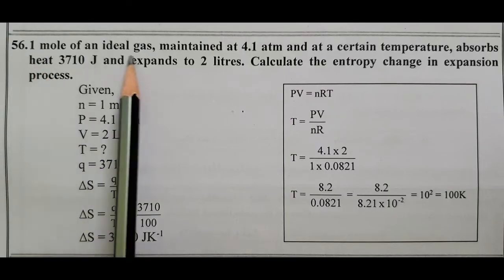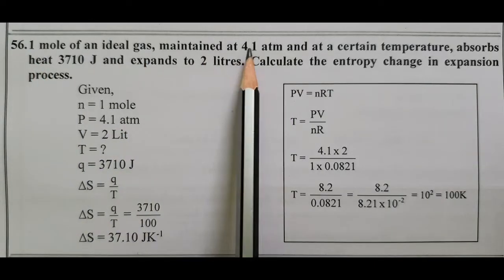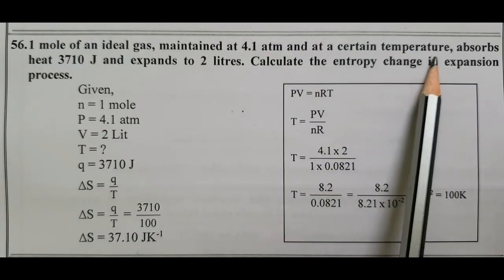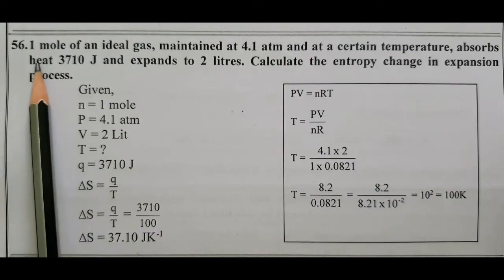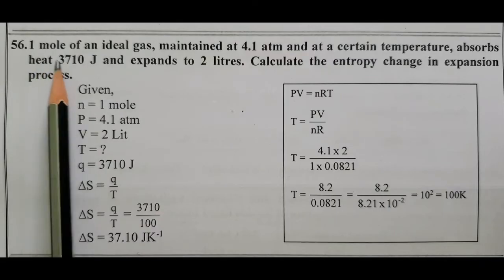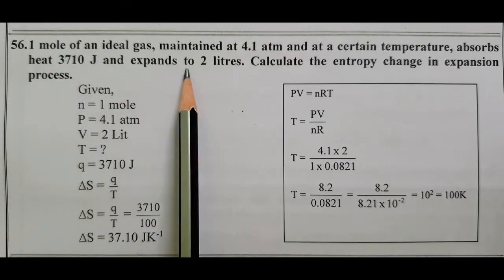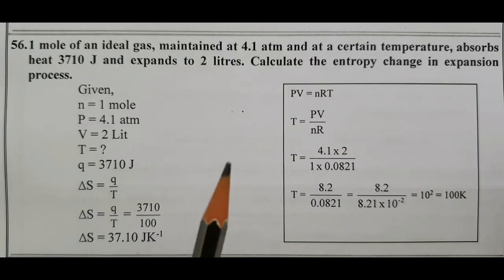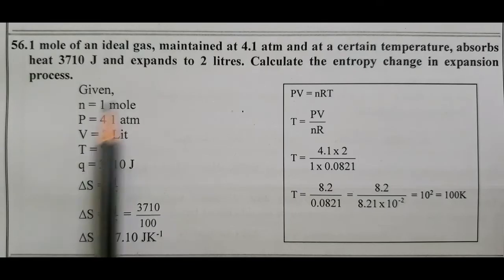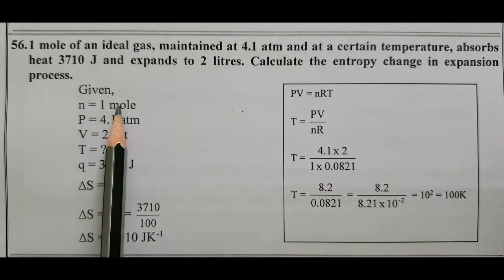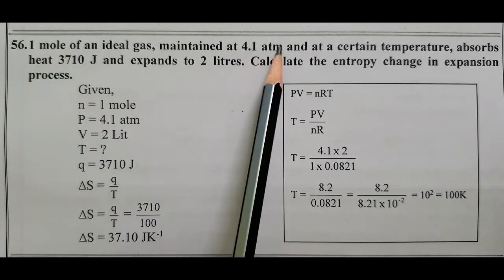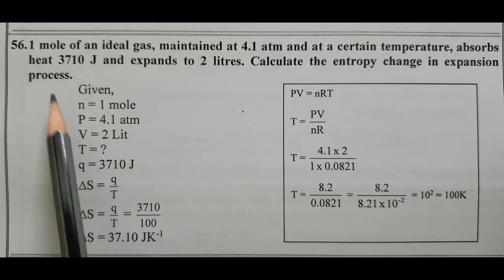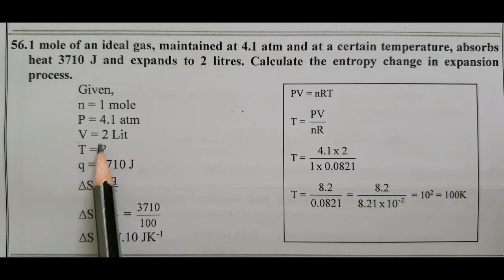Question 56: 1 mole of an ideal gas maintained at 4.1 atm atmospheric pressure and at a certain temperature absorbs heat Q equals 3710 J and expands to 2 liters. Calculate the entropy change in the expansion process. Given: n equals 1 mole, pressure P equals 4.1 atm, volume V equals 2 liters, and Q equals 3710 J.